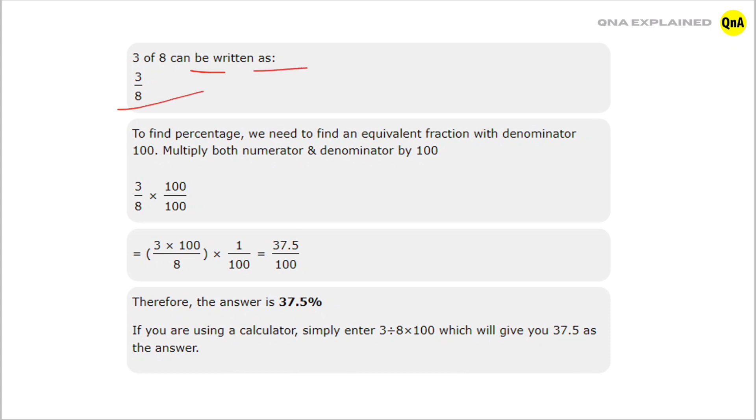To find percentage, we need to find an equivalent fraction with denominator 100. Multiply both numerator and denominator by 100. 3 upon 8 into 100 upon 100 is equal to 3 into 100 upon 8 into 1 upon 100, which is equal to 37.5 upon 100.